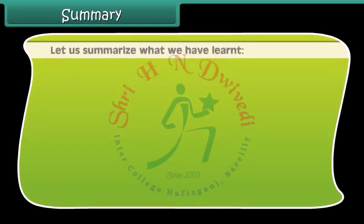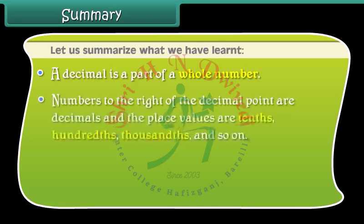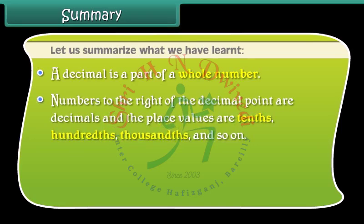Let us summarize what we have learned. A decimal is a part of a whole number. Numbers to the right of the decimal point are decimals and the place values are tenths, hundredths, thousandths and so on.